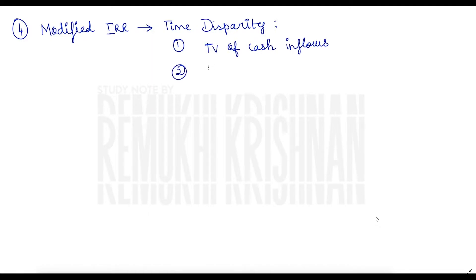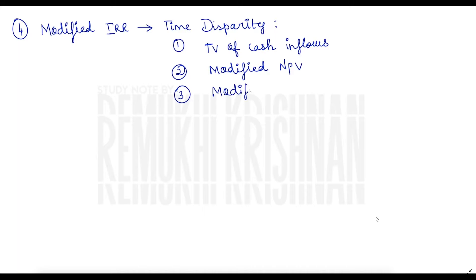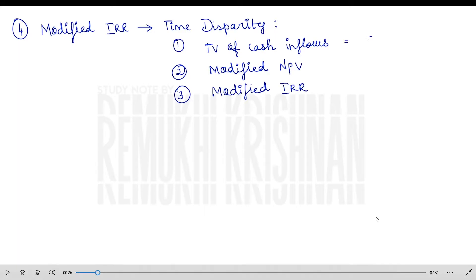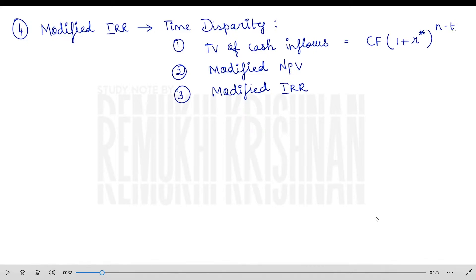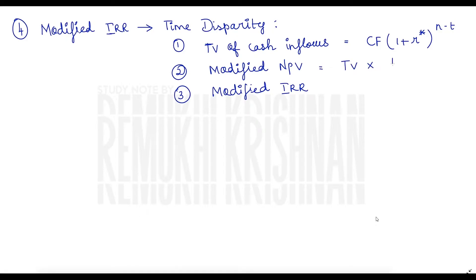To recall the steps of time disparity: we are going to find three things — one is terminal value of cash inflows, modified net present value, and modified IRR. The formula for terminal value of cash inflows is cash flow multiplied by (1 + r)^(n minus t), where r is your reinvestment rate.